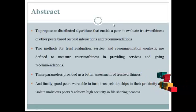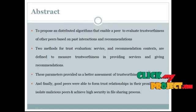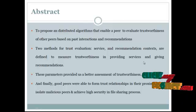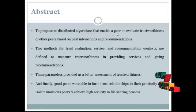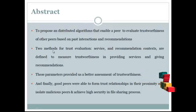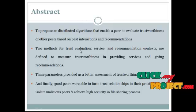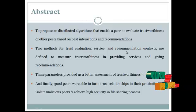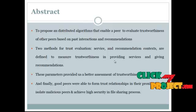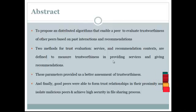Here is the abstract of our process. In a P2P system, building trust relationships among peers can mitigate attacks of malicious peers. In that process, we have to propose distributed algorithms that enable peers to evaluate trustworthiness of other peers based on past interactions and recommendations. The trust evaluation is based on two methods: the first one is service and recommendation context, required to measure trustworthiness in providing services and giving recommendations. The interactions and recommendations are evaluated based on importance, reasonableness, and peer satisfaction parameters.